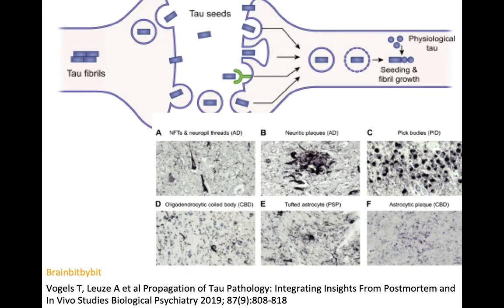There are many diseases with abnormal tau proteins and they all have a slightly different form. There is abnormal tau in neurons in both Alzheimer's disease and Pick's disease, but the abnormal tau can also be located in glial cells — in oligodendrocytes and astrocytes in corticobasal degeneration — or only in astrocytes, as is the case in progressive supranuclear palsy.